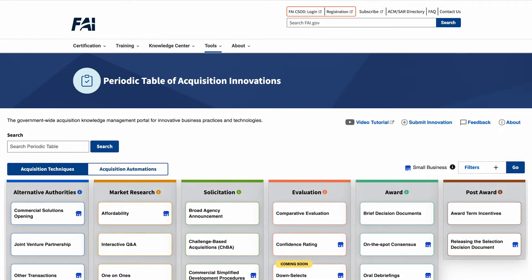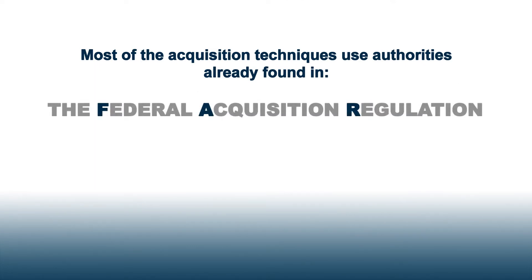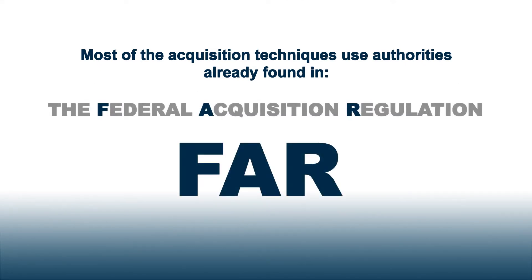The site showcases practices to promote the adoption and adaptation of innovative acquisition techniques and automations. Most of the techniques in the Periodic Table use authorities already found in the Federal Acquisition Regulation. The description for each practice will specify its inherent authority or supporting litigation case, if applicable.